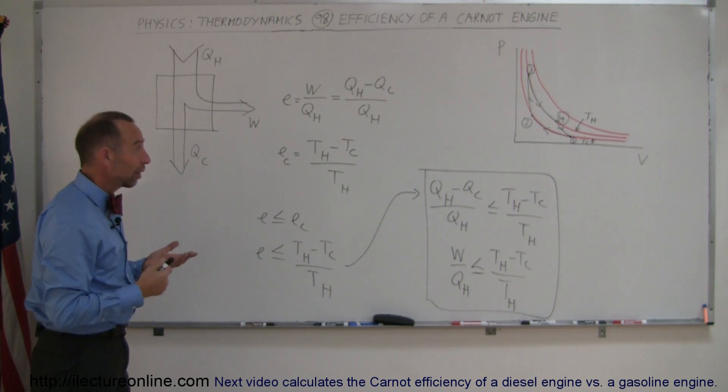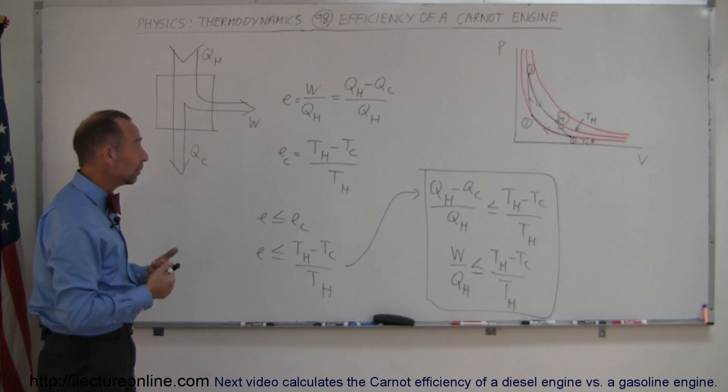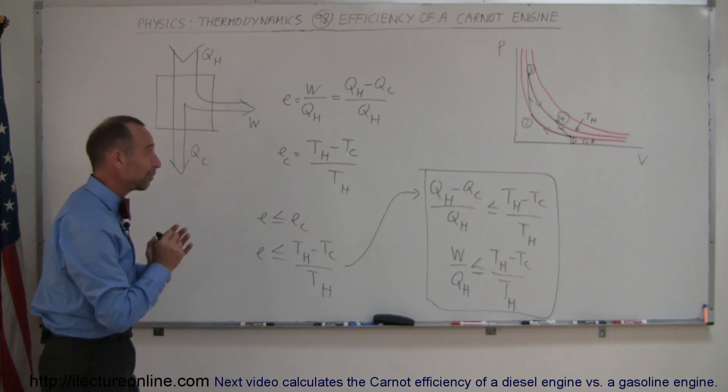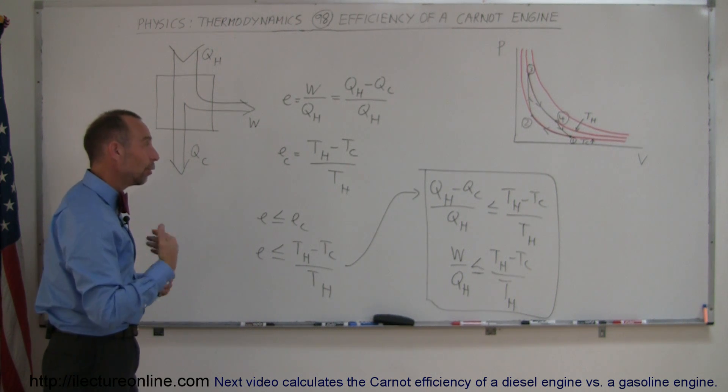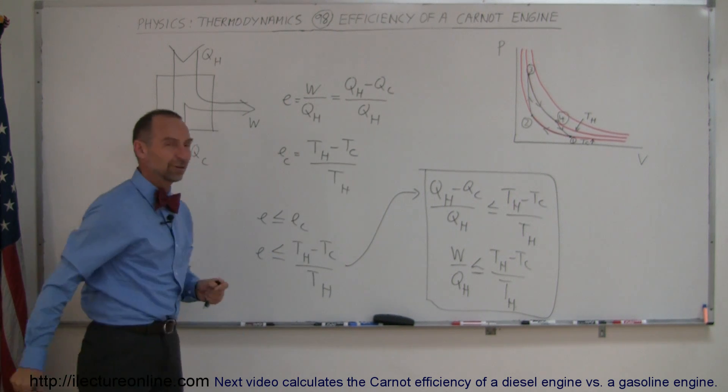Carnot realized and proved that the maximum efficiency obtainable—the second law of thermodynamics says you cannot obtain 100% efficiency—but the only way to get close is to have T_C approach zero.